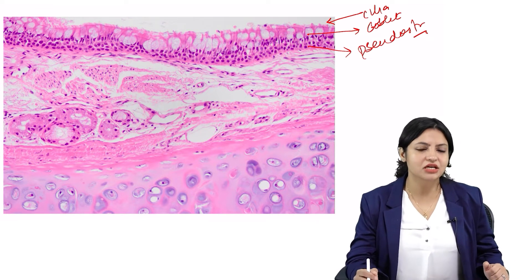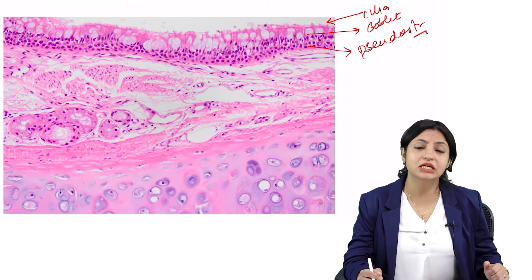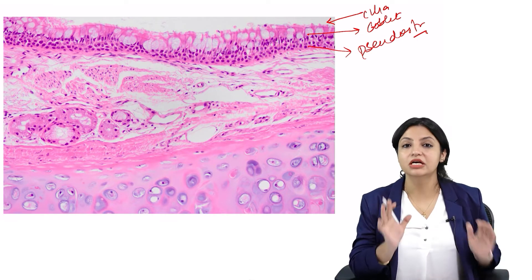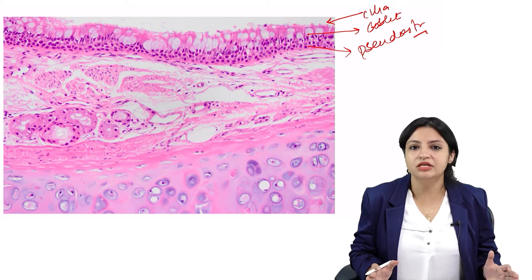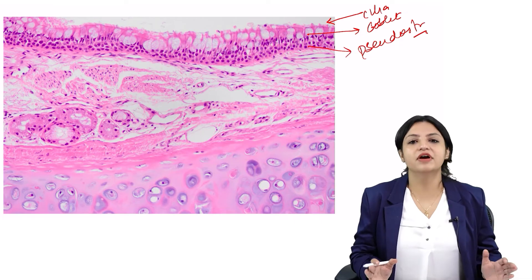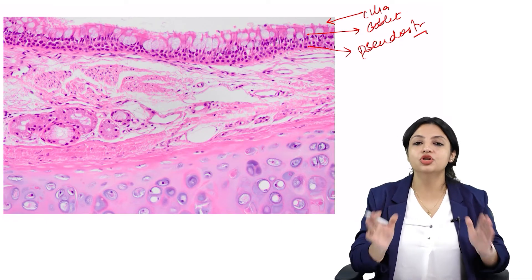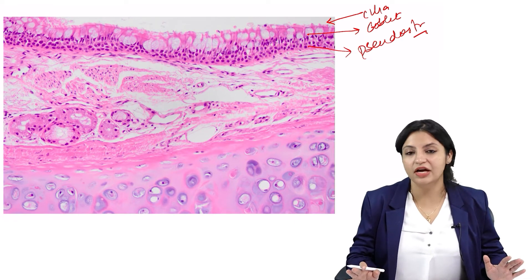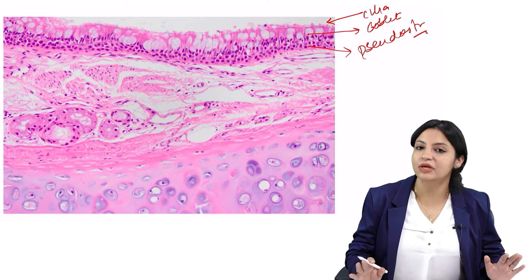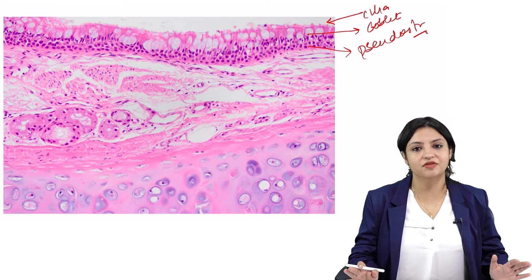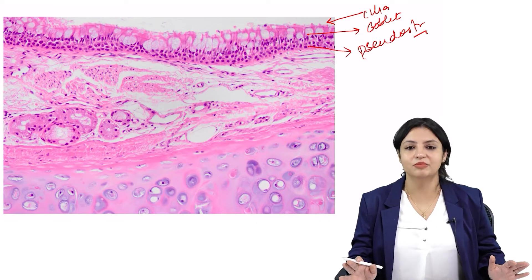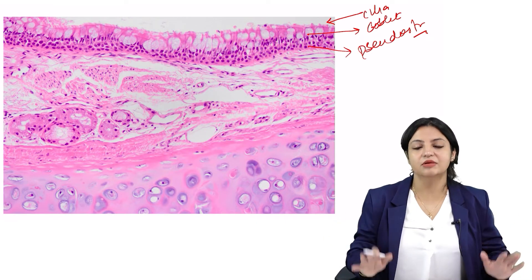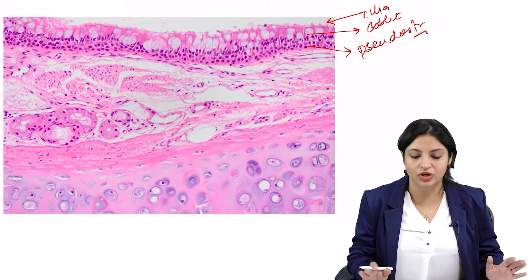Pseudostratified ciliated columnar epithelium is seen in respiratory tissue, so this is probably respiratory. The first point is identifying the parent organ — your parent organ has been identified. It's respiratory epithelium.